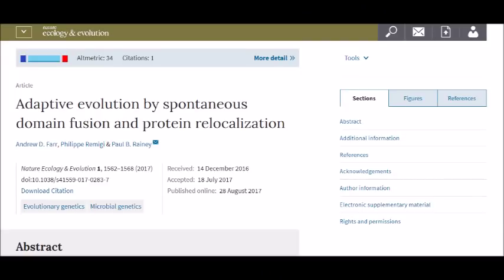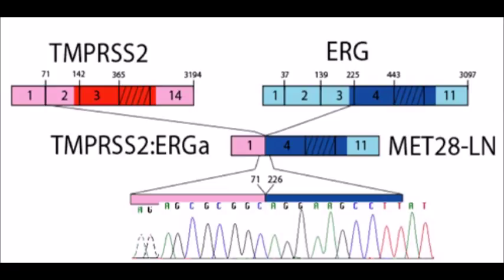The 2017 paper Adaptive Evolution by Spontaneous Domain Fusion and Protein Relocalization details how the gene for cytosolic D-guanylate cyclase fused with the gene for fatty acid desaturase and generated a new adaptive phenotype. So even if Tompkins is right about it being a functional gene and spanning the fusion site, that doesn't make the fusion site not a fusion site.